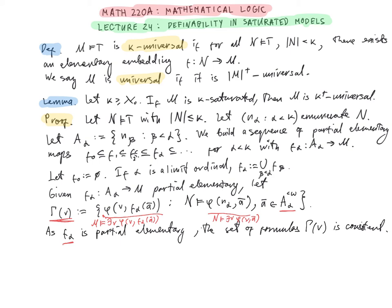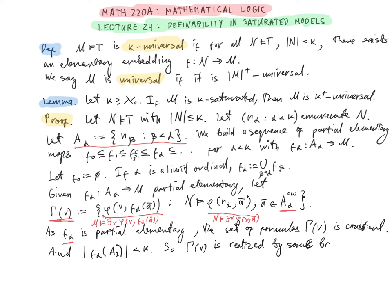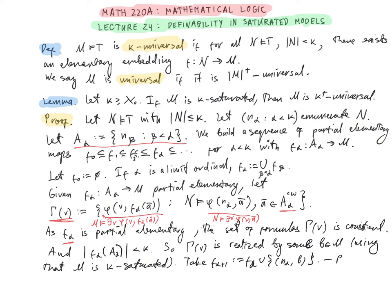This tells us that Γ(v) is a partial type. Note that the cardinality of the set of parameters used in this partial type, which is just F_α(A_α), is strictly less than κ because A_α had size strictly less than κ by definition. So Γ(v) is realized by some element b in M, using that M is κ-saturated.